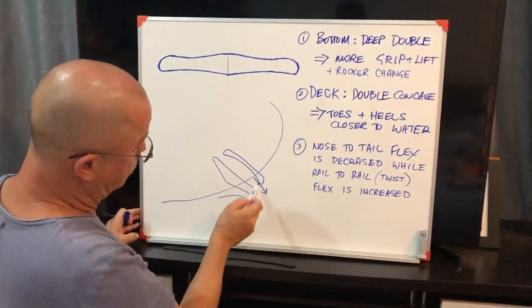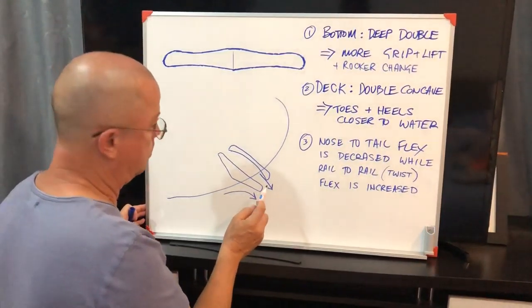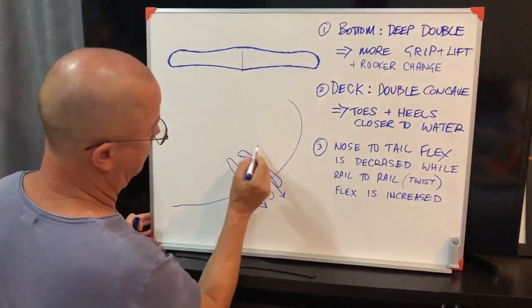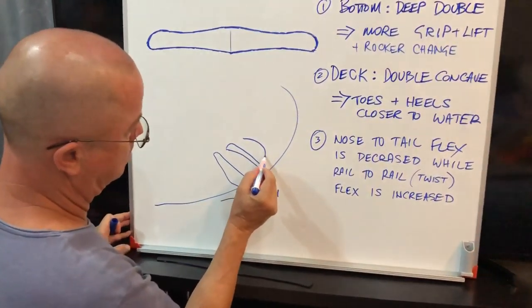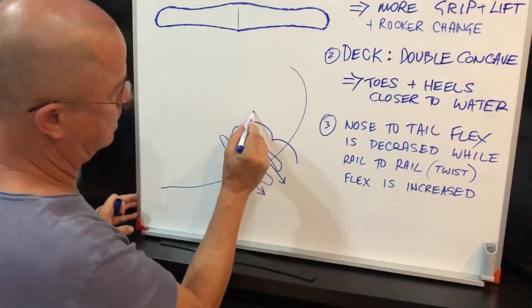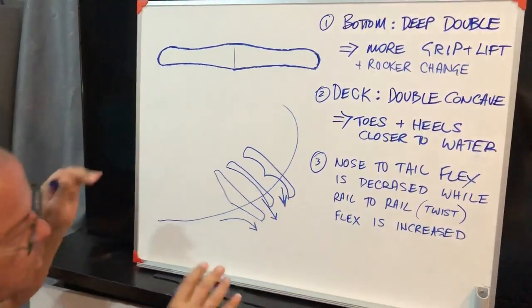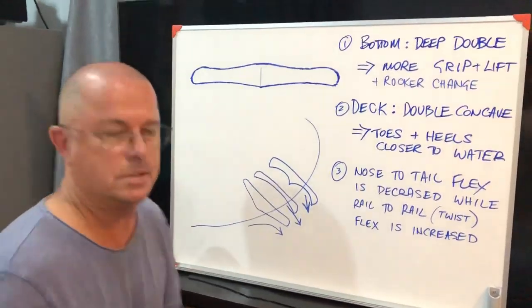The board's at a certain angle but you're actually digging the rail in quite radically. Now if you go to a double concave, yes I'm exaggerating it, now you're getting it to actually hook in almost to the angle of what the fin is like.